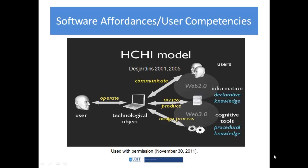Taking a moment to look a bit deeper into this model, we have some technology competencies required, and there's an interaction between the learner and the technology that involves things like navigating the user interface. Then we have some social competencies required, and these are interactions between learners that use the affordances of communication provided by the technology.